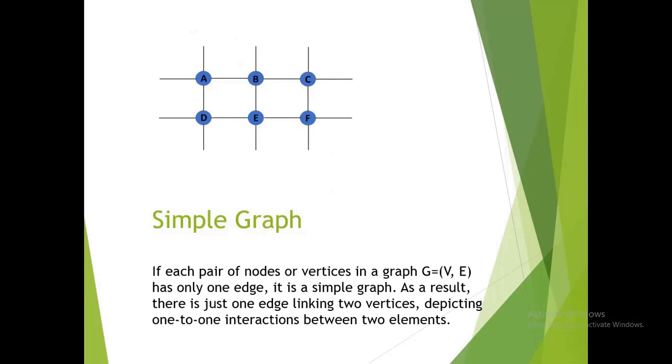Simple graph: if each pair of nodes or vertices in a graph G = (V, E) has only one edge, it is a simple graph. As a result, there is just one edge linking two vertices, depicting one-to-one interaction between two elements.